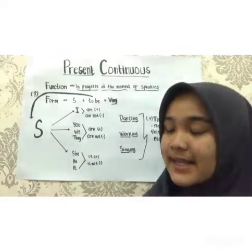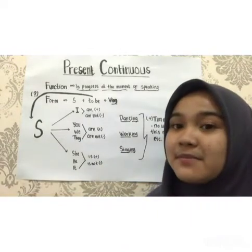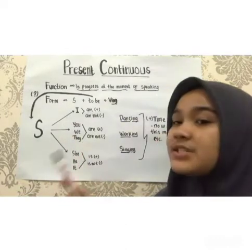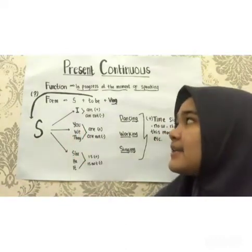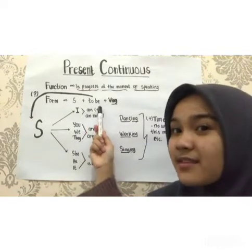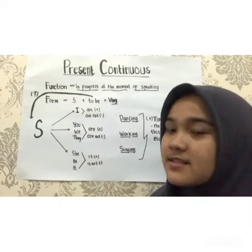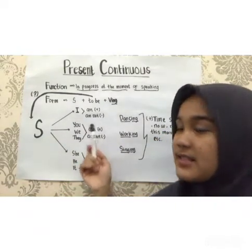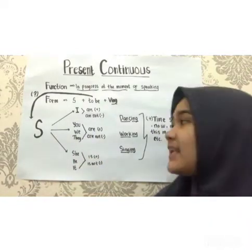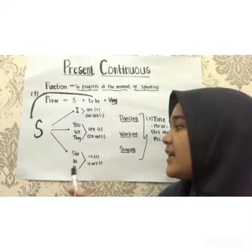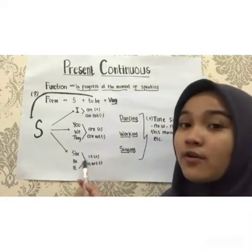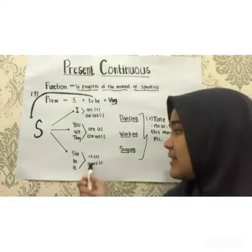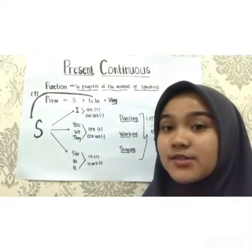In the subject, there are three groups. 'I' uses 'am' for positive and 'I'm not' for negative. 'You, we, they' use 'are' for positive and 'are not' or 'aren't' for negative. 'He, she, it' uses 'is' for positive and 'is not' or 'isn't' for negative.